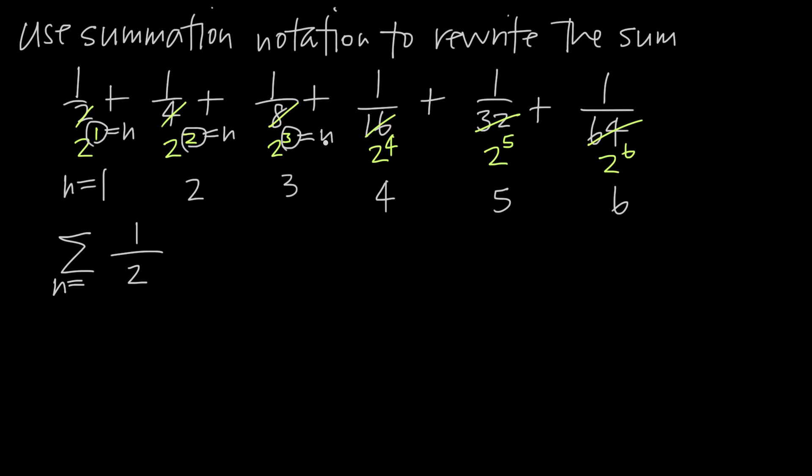So what we see is that if we assign values, n equals 1, 2, 3, 4, 5, 6, that correspond with each of these terms, then what this really becomes is 1 over 2 to the n. And 1 over 2 to the n can represent each of these terms as long as n starts at 1.